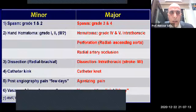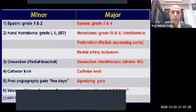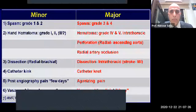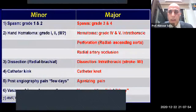From my own clinical experience, I classify transradial complications into minor and major. Please, you can agree, disagree, or modify — this is my own classification, not published in the literature. Minor complications include grade 1 or 2 spasm, and hematoma grades 1, 2, and sometimes 3. Grade 3 or 4 spasm and grade 4 or 5 hematoma, or any intrathoracic hematoma threatening the patient's life, should be classified as major.